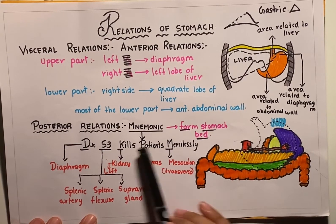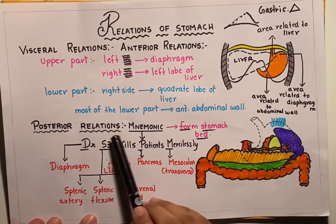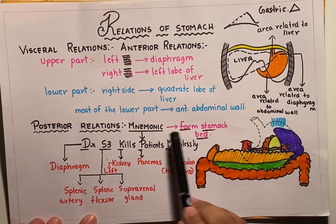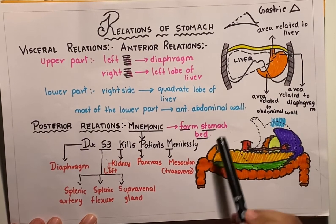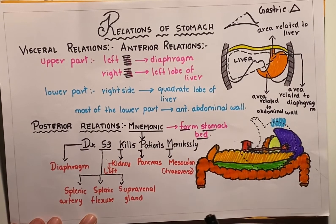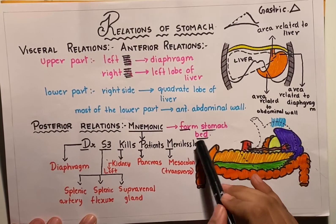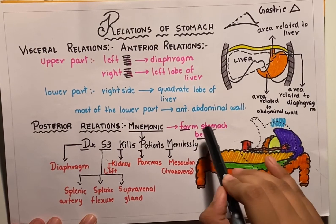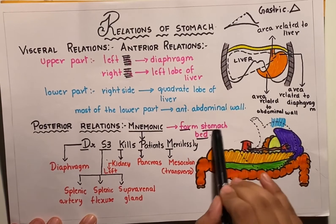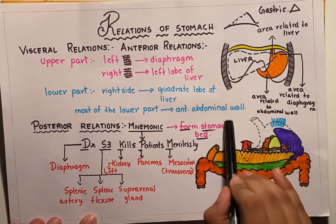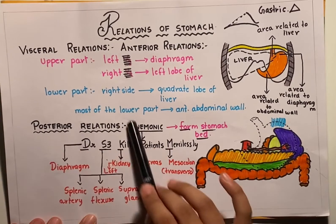The posterior relations of the stomach form the stomach bed. Just as we rest on a bed, the stomach also rests on the stomach bed, which is formed by its posterior relations.